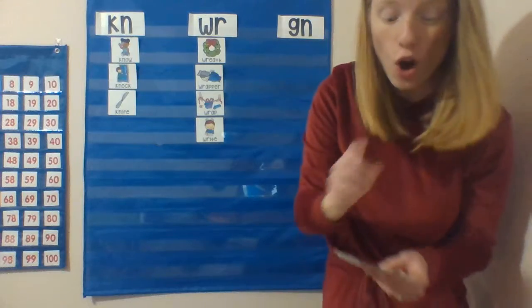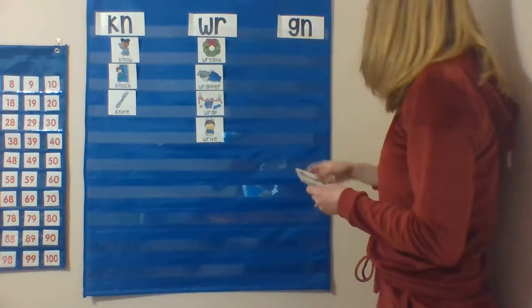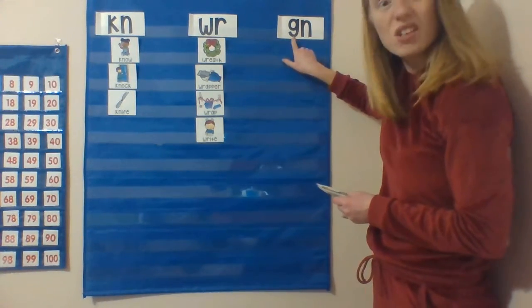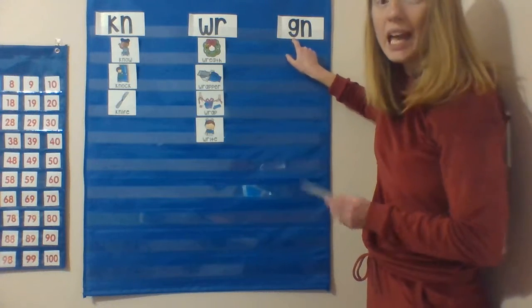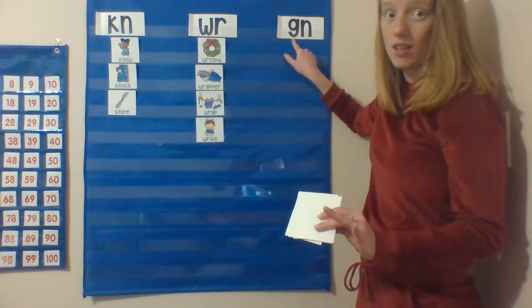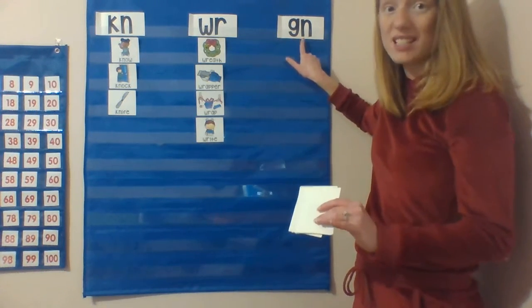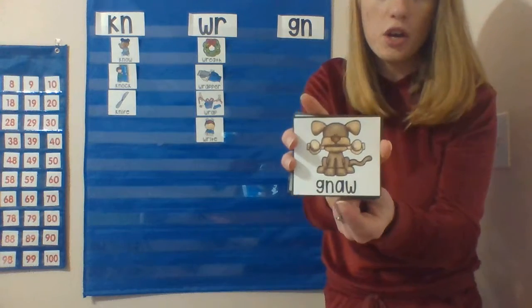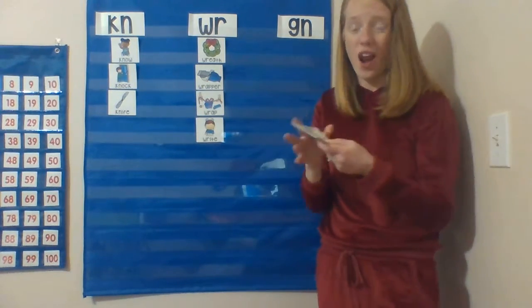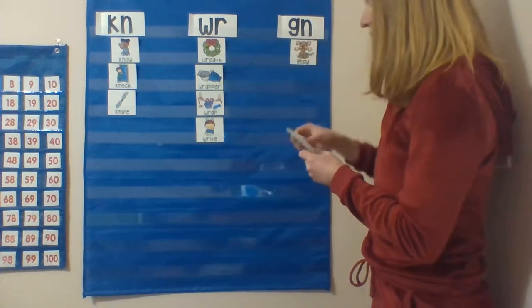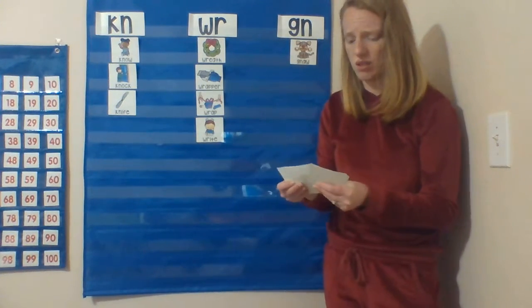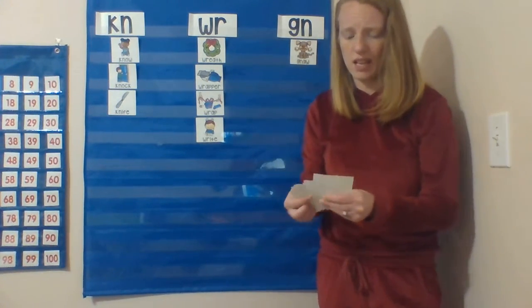There's also the ninja G, and the ninja G is only a ninja when it is next to N. In words like gnaw - my dog likes to gnaw on a bone.